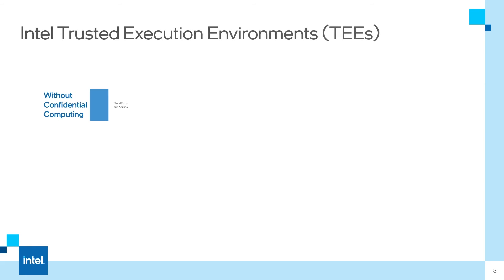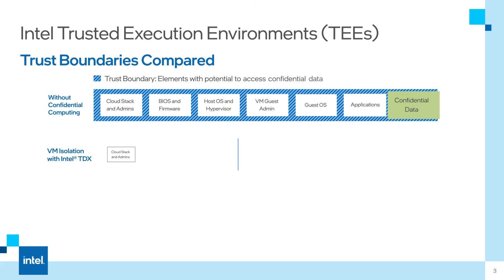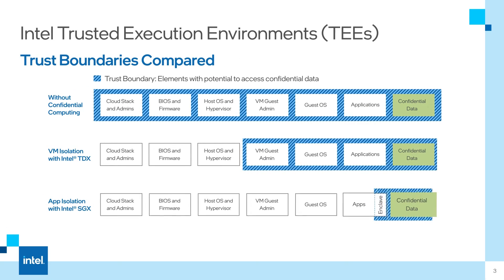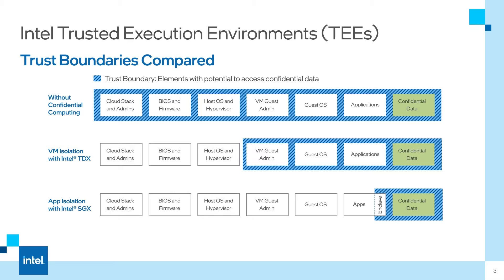This diagram shows the different trust boundaries for confidential computing. Without confidential computing you have the largest trust boundary. A rogue administrator could compromise your secrets. A compromised BIOS or Host OS would also leave your workload exposed. There is a lot more trust needed, and this is one reason why confidential workloads traditionally have not run on public infrastructure.